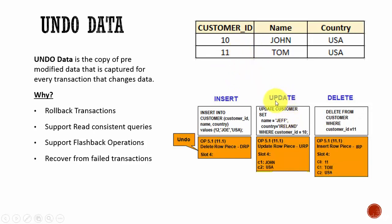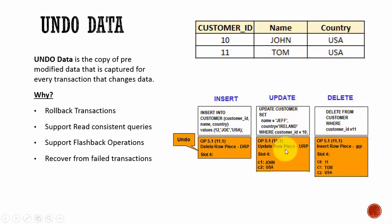In the case of an UPDATE, we are updating the name to Jeff and country to Ireland for customer ID 10. This row is being updated to Jeff and Ireland. So, it takes the original values — John and USA — and stores them in the Undo segment. If we have to do an Undo, it takes those original values and applies them back to that row, restoring the original data.